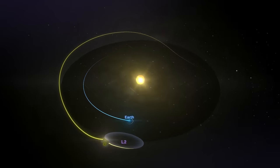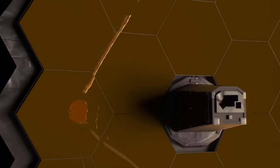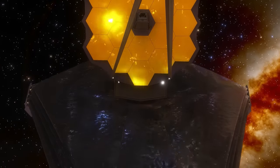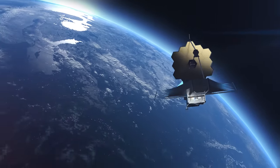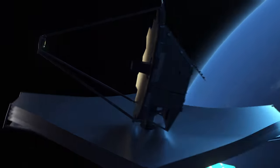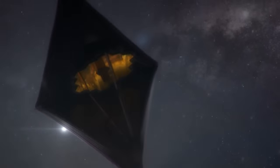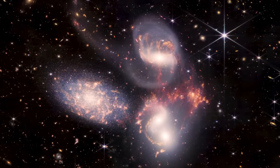The Webb telescope's placement at the second Lagrange point, L2, roughly 1.5 million kilometers from Earth, is critically strategic. At this unique position, the telescope benefits from a stable orbit, courtesy of the equilibrium in gravitational forces exerted by the Earth and Sun. This stability is essential for precise and consistent observations. Moreover, as highlighted by Tyson, its location on the side of Earth opposite the Sun is a significant advantage. This positioning ensures an unobstructed view of the cosmos, free from the potential interference of Earth's light and heat, thereby providing an ideal setting for the Webb to observe the most ancient and distant cosmic objects in unparalleled clarity.